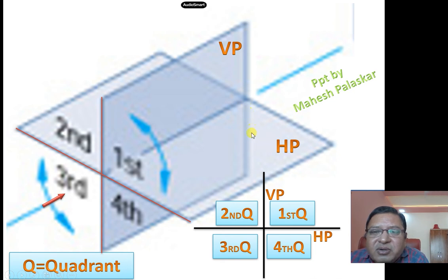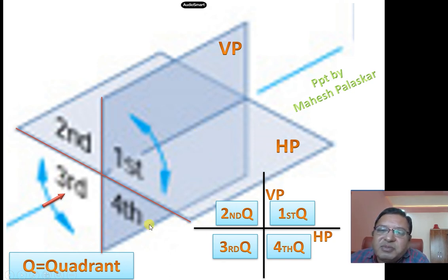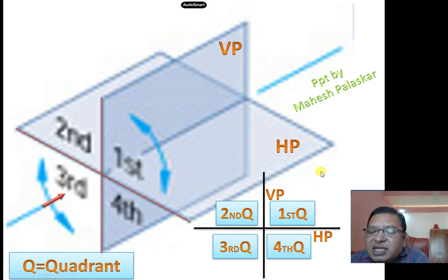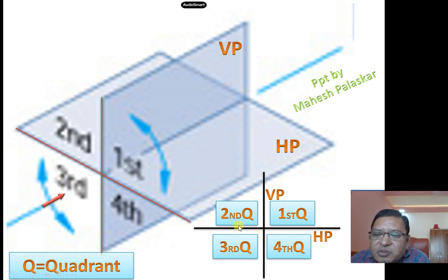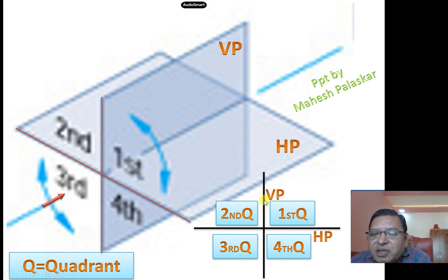When the object is in the first quadrant, after rotation of HP, the front view will remain above the XY line and the top view will go below the XY line. After rotation, this portion of HP will overlap with this portion of VP and you will get only one plane. So the front view will be above the XY line and the top view will be below the XY line in the first angle method of projection.